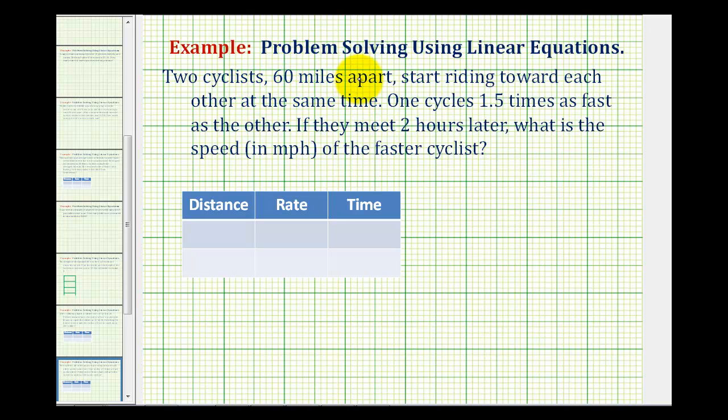Two cyclists 60 miles apart start riding toward each other at the same time. One cycles 1.5 times as fast as the other. If they meet two hours later, what is the speed in miles per hour of the faster cyclist?